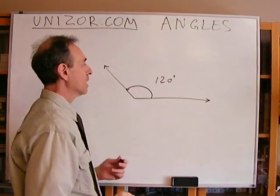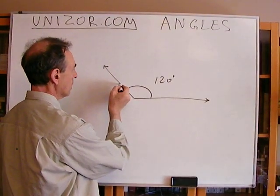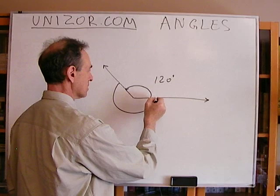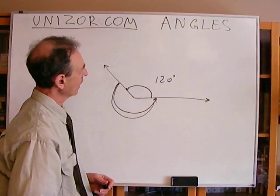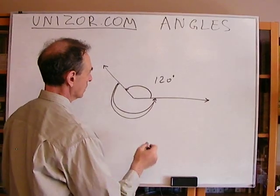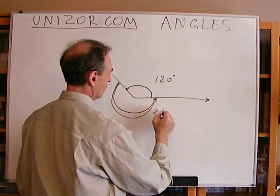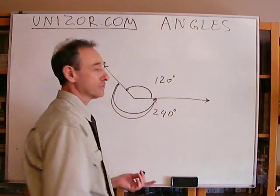Well, at the same time, you can measure from this ray, again, counterclockwise, and it will be 360 minus 120. And this is 240 degrees. So these are two different angles.